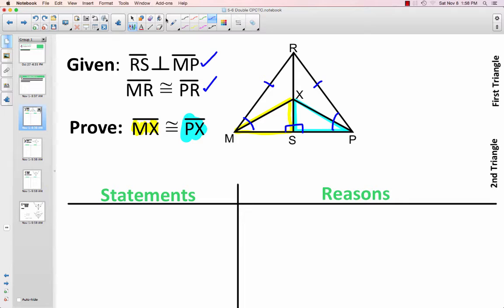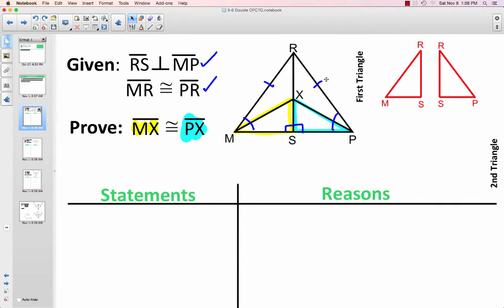But if you notice, we actually have enough information to prove different triangles congruent. So if we take a look here, we have the right angles, we have angle M congruent to angle P, and we have side MR congruent to PR.